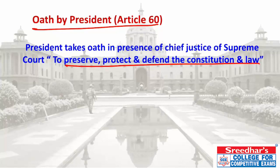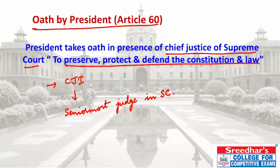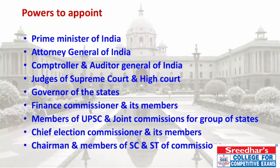The oath of office is administered to the President by the Chief Justice of India (CJI). In case the Chief Justice of India is absent, the senior-most judge of the Supreme Court administers the oath. In the absence of the President — for example, due to death or sudden termination — the Vice President or the next in line acts as temporary President and takes a similar oath.